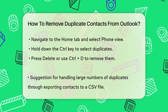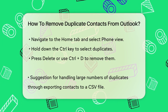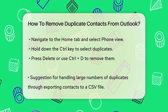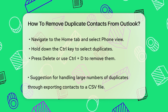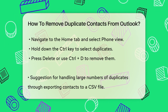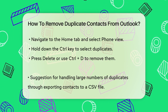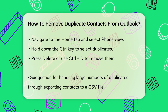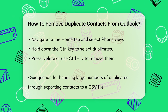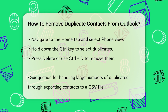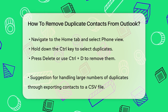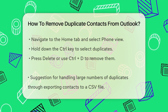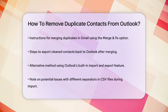If you have a large number of duplicates, manually deleting them can be time-consuming. Here's a more efficient method: export your Outlook contacts to a CSV file, then import them into your Gmail account. In Gmail, go to the Merge and Fix option on the sidebar, and Google will identify and allow you to merge the duplicate contacts. After merging, export the cleaned-up contacts back to Outlook.